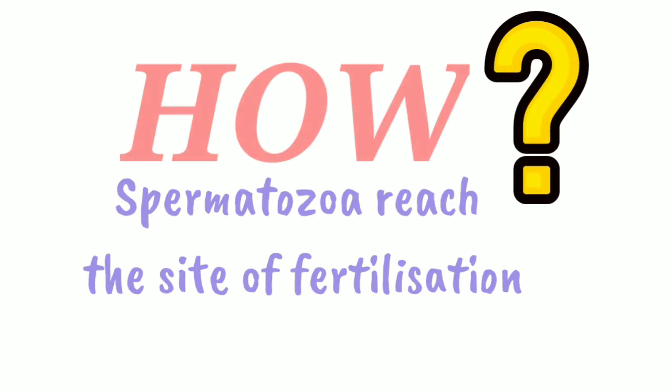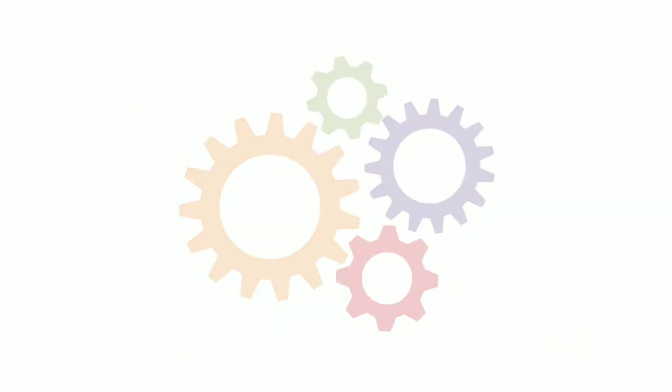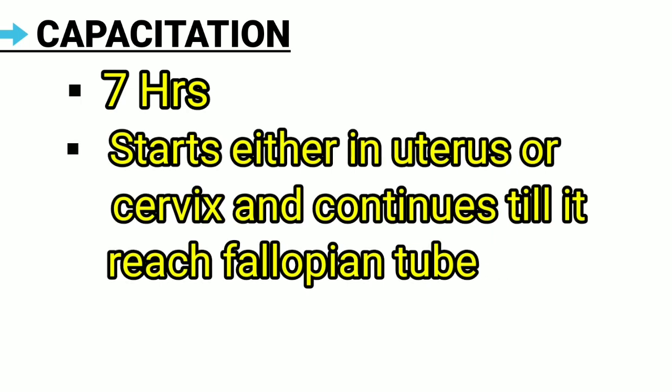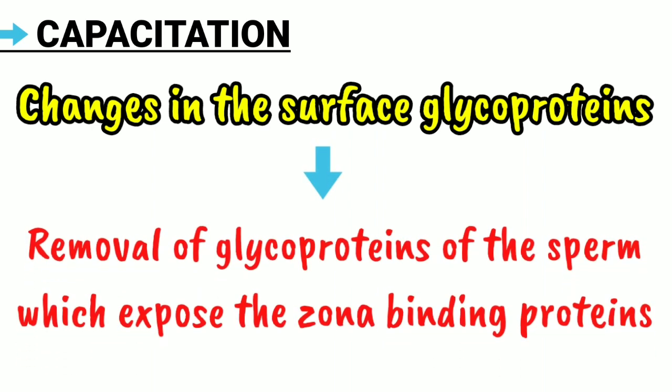The spermatozoa reach the site of fertilization by chemotaxis — by the chemicals released by the follicular cells of the ovum. Inside the female genital tract, the sperm undergoes final maturation called capacitation, which takes approximately seven hours. It starts either in the cervix or in the uterus and continues up to the fallopian tubes. During capacitation, there are changes in the surface glycoproteins — specifically the removal of glycoproteins of the sperm — which expose the zona-binding proteins.